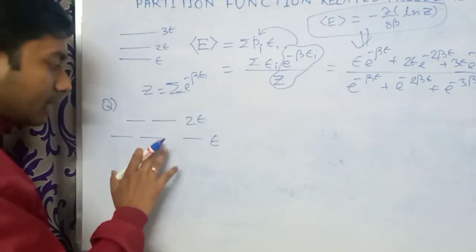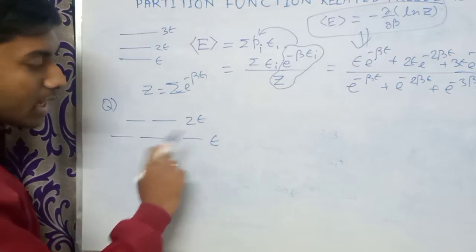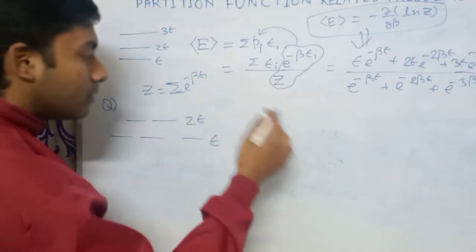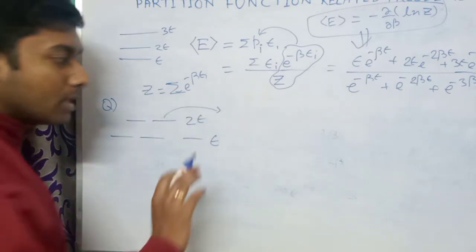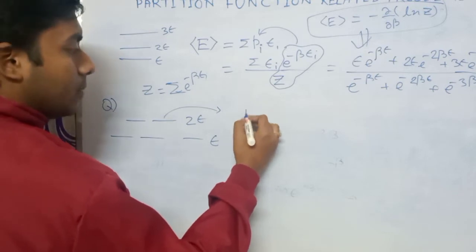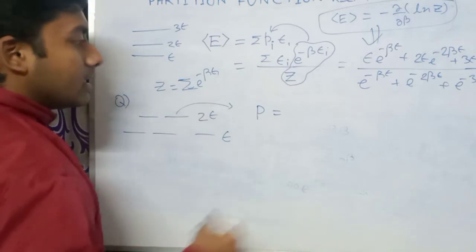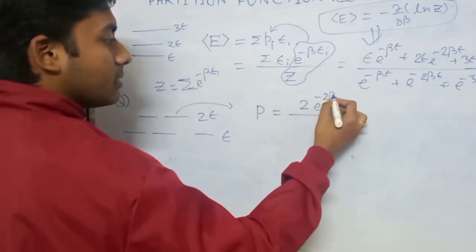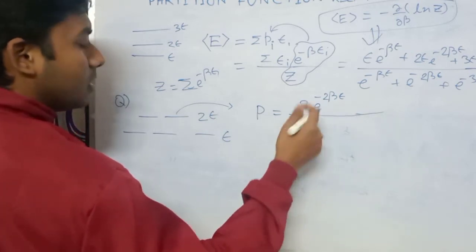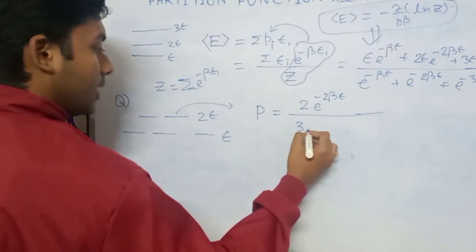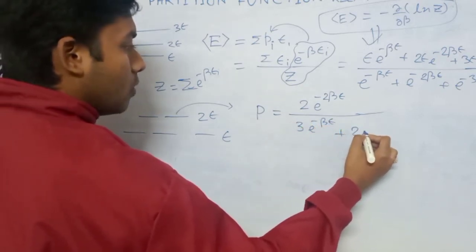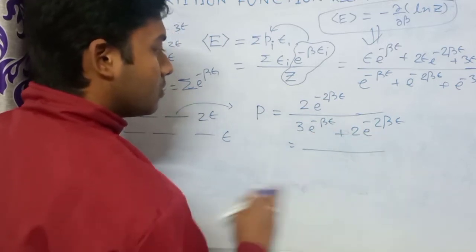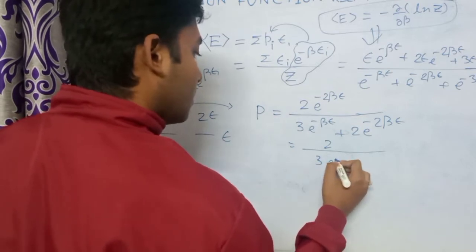For the next problem, suppose the ground state of energy epsilon is triply degenerate and the 2-epsilon state is doubly degenerate. To find the probability of finding the particle in the second excited state, since it is doubly degenerate we place a factor of 2 in the numerator: 2 times e to the power minus 2 beta epsilon. The partition function z is 3 times e to the power minus beta epsilon plus 2 times e to the power minus 2 beta epsilon.